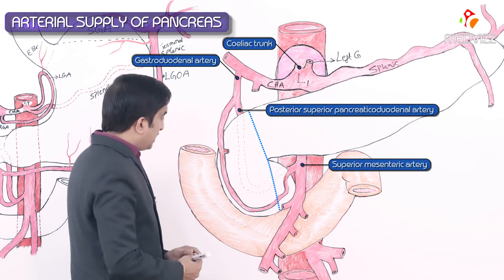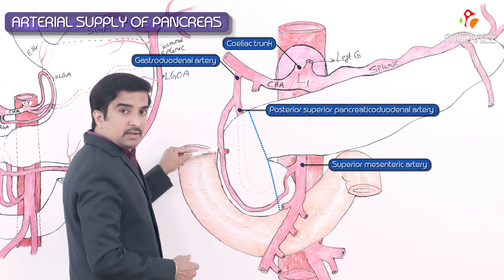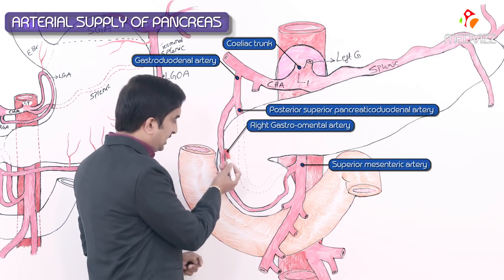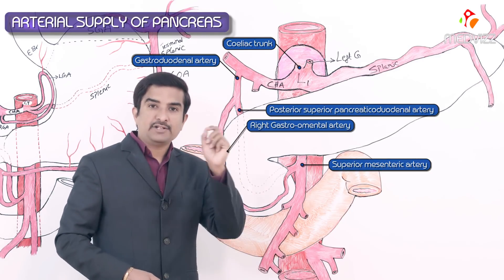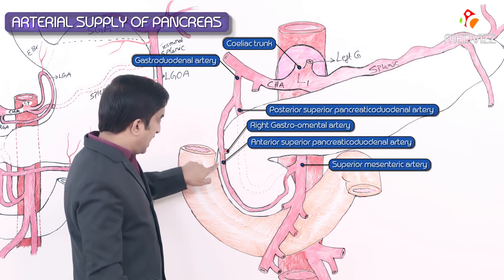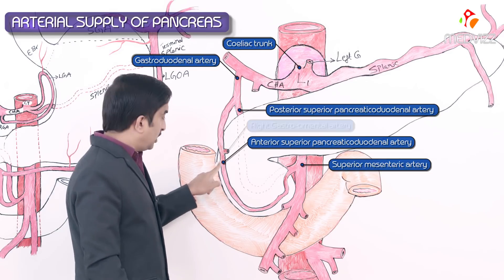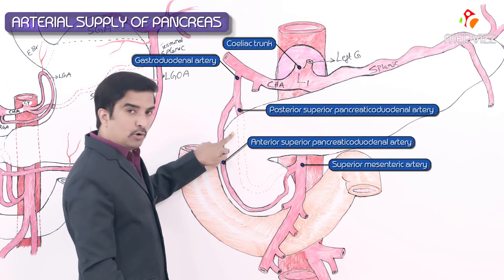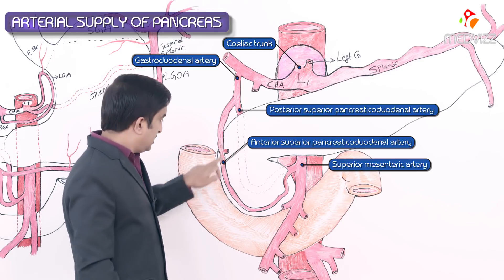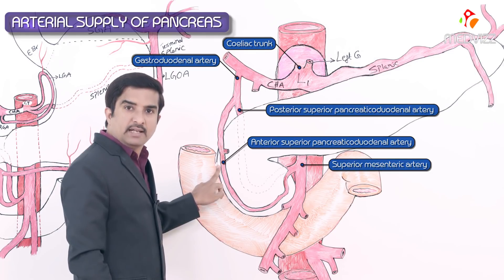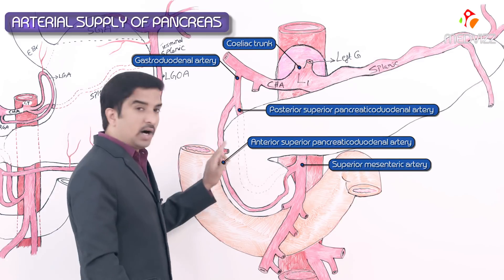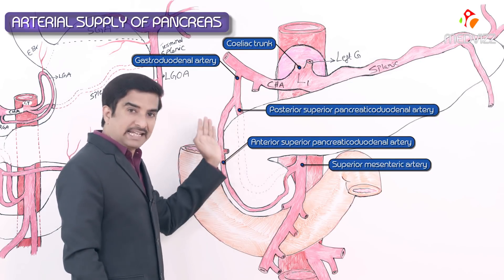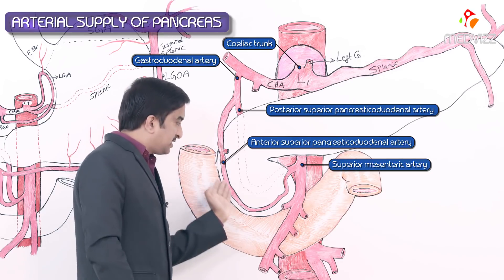The gastroduodenal artery gives off two terminal branches: the right gastroomental artery and the anterior superior pancreaticoduodenal artery. So the two branches from the celiac trunk via the gastroduodenal artery are the posterior superior pancreaticoduodenal artery and the anterior superior pancreaticoduodenal artery. These two arteries run along the C-shaped curve of the second part of the duodenum and the head of the pancreas, and anastomose with branches of the superior mesenteric artery.